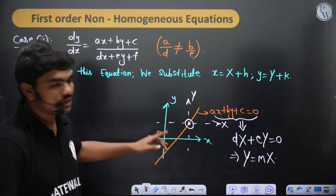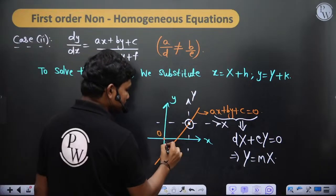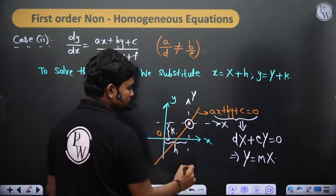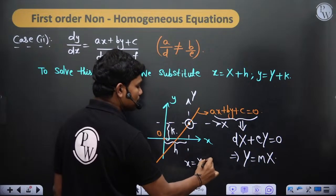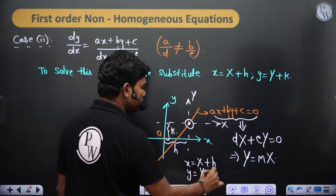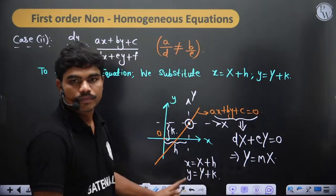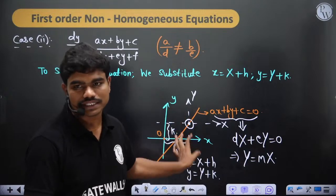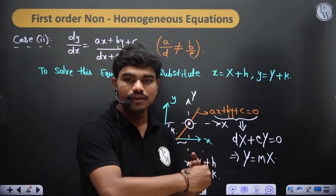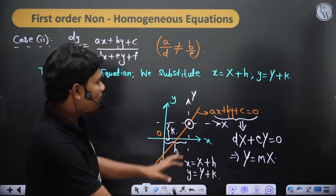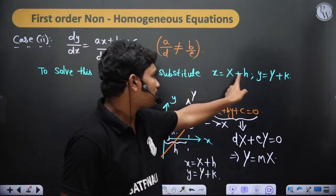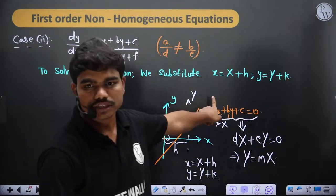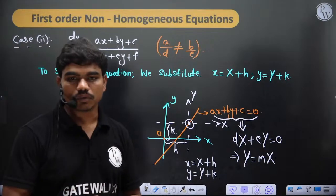This coordinate transformation shifts the origin, so the line equation which previously had a constant term now passes through the origin in the new coordinates. The geometric intuition is that by shifting to the right location, the constant terms vanish. Mathematically, we're just substituting x = X + H and y = Y + K, which gives dx = dX and dy = dY since H and K are constants.